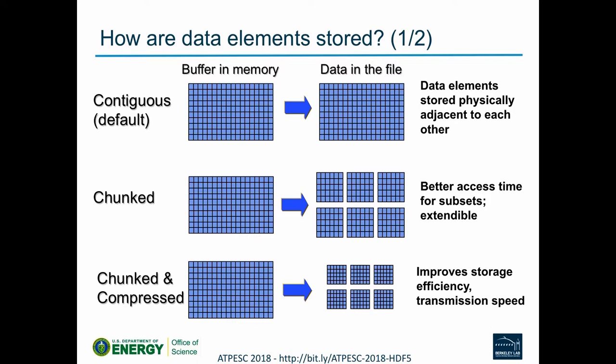Once you define your data space and data type for an HDF5 dataset, what does it look like in the file? In memory you're almost always dealing with a regular contiguous buffer, possibly a subset of the data. There are three storage formats supported in parallel. By default — contiguous storage — you just allocate the space in the file. If you create a 1,000 by 1,000 dataset with 32-bit integers, you get a 4 MB contiguous dataset in the file.